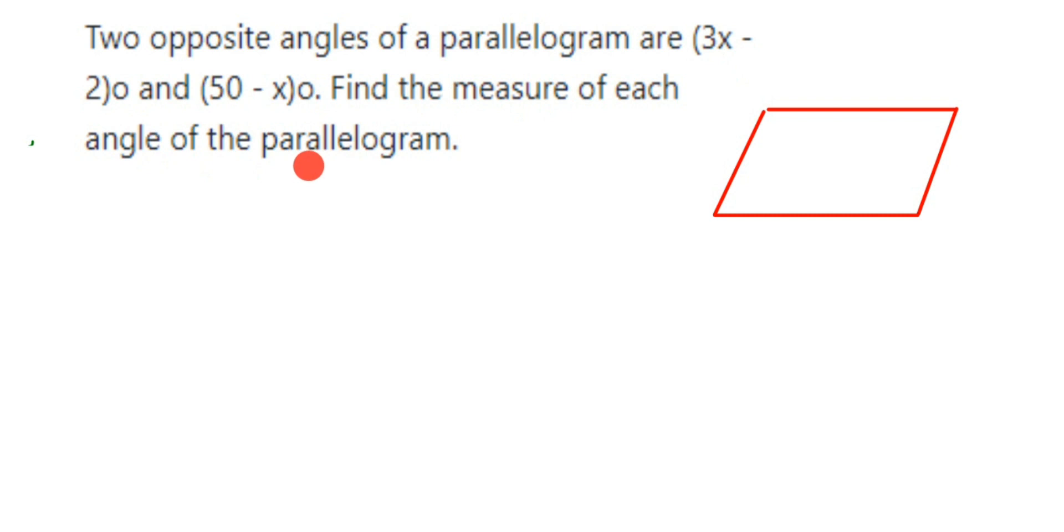They have given the opposite angles of the parallelogram, and we have to find out the other angles. We know that in a parallelogram, opposite sides are equal and opposite angles are also equal. We're going to use this property to find the value of x first, and then later find the other angles.